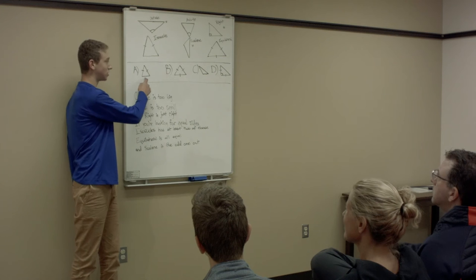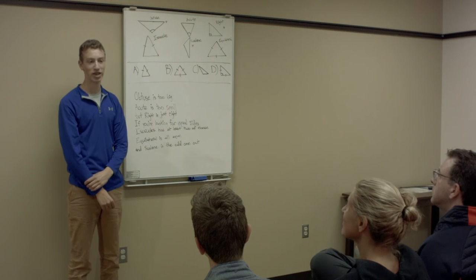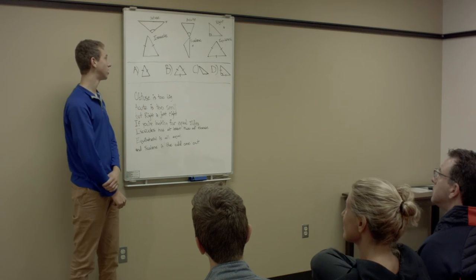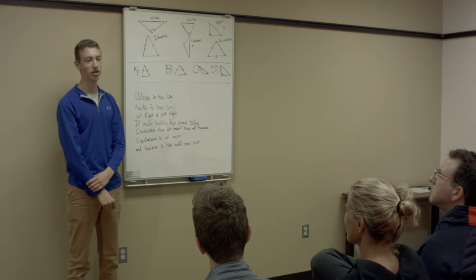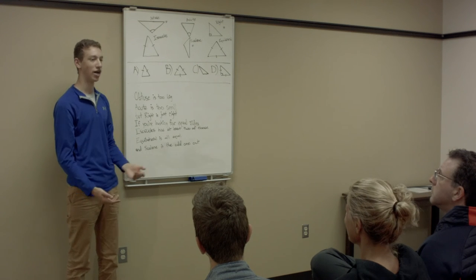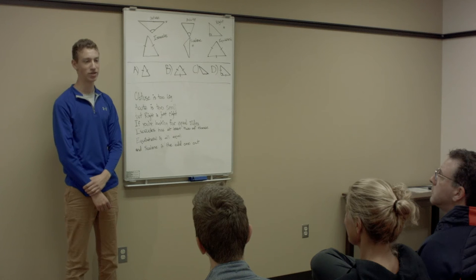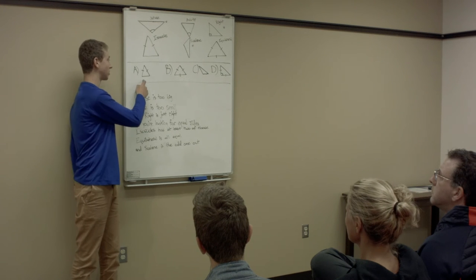Now let's do some practice problems now that you've learned all the types of triangles. But before we start, it's important to know that a triangle can be more than one type — so it could be equilateral and isosceles, for example. Let's start with the first problem.